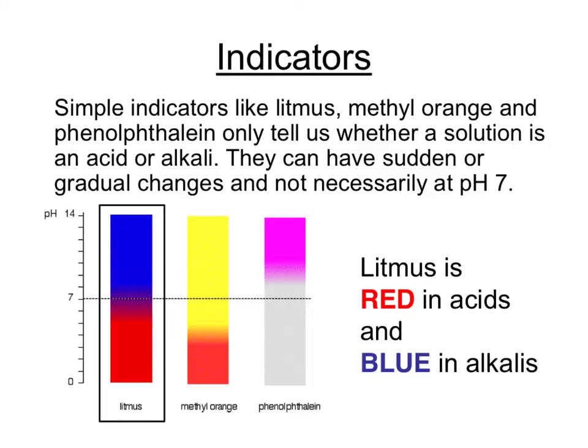Some indicators have only got two colours and therefore can only tell us whether a solution is acidic or alkaline. Litmus is unusual in that it changes at around about pH 7 and so is red in all acids and blue in all alkalis.